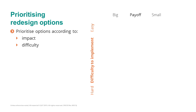Some options require deploying new infrastructure or making significant changes to IT infrastructure, or even requiring business partners such as suppliers to make significant changes in their own processes. In that case they will have a high level of difficulty.